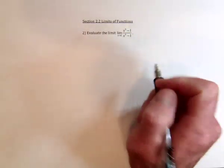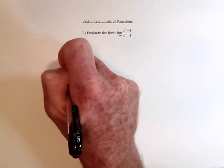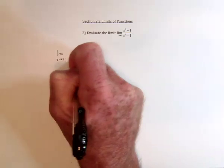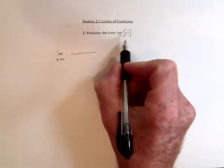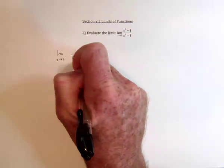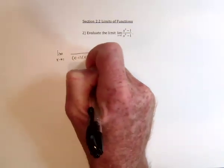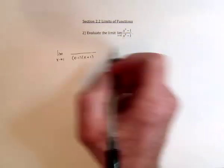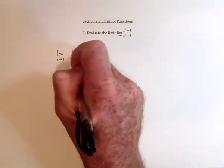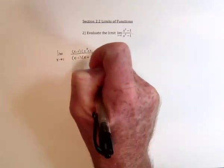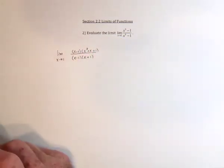So the next thing to do is try some algebra. We've got the limit as x approaches 1. This can be factored as x minus 1 times x plus 1. And then you may remember from intermediate algebra that this can be factored as x minus 1 times x squared plus x plus 1 from the difference of cubes formula.